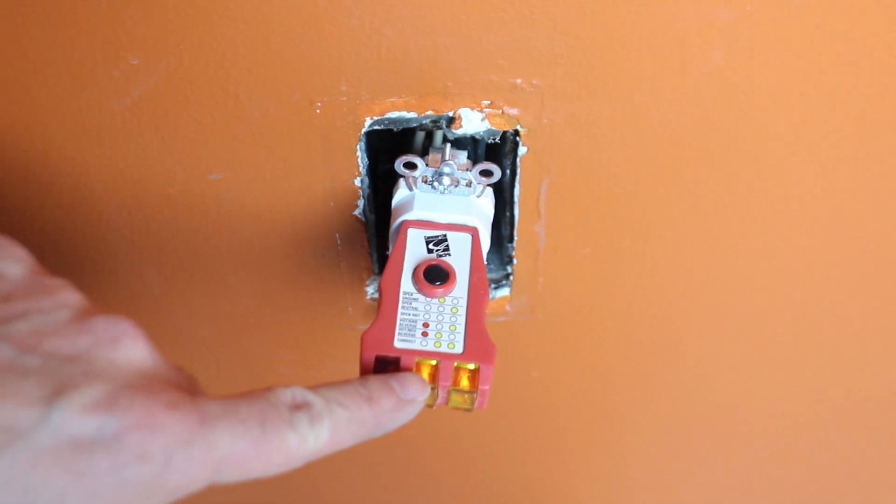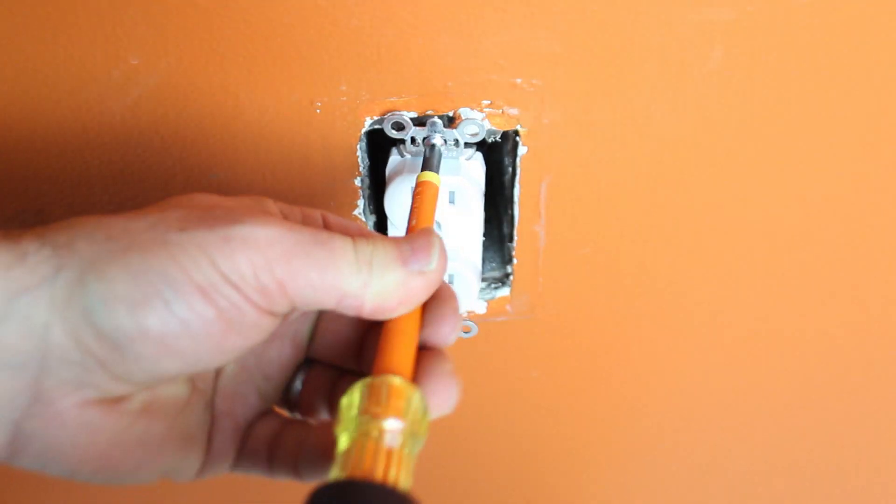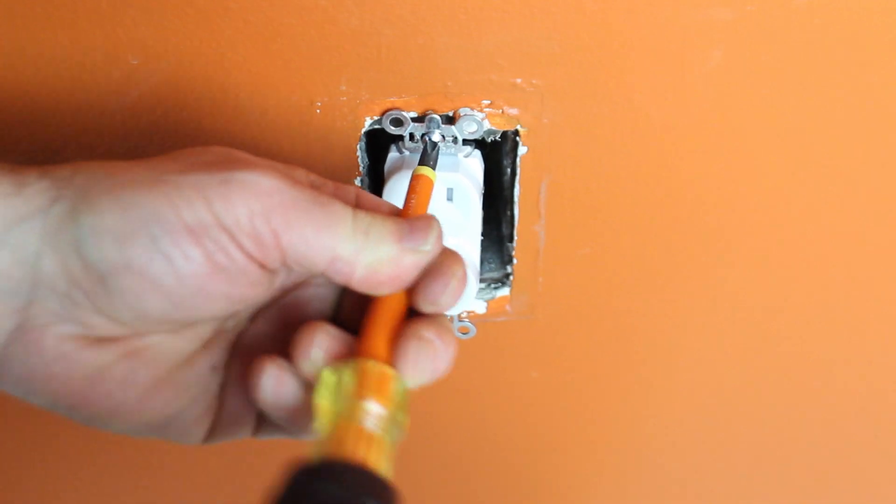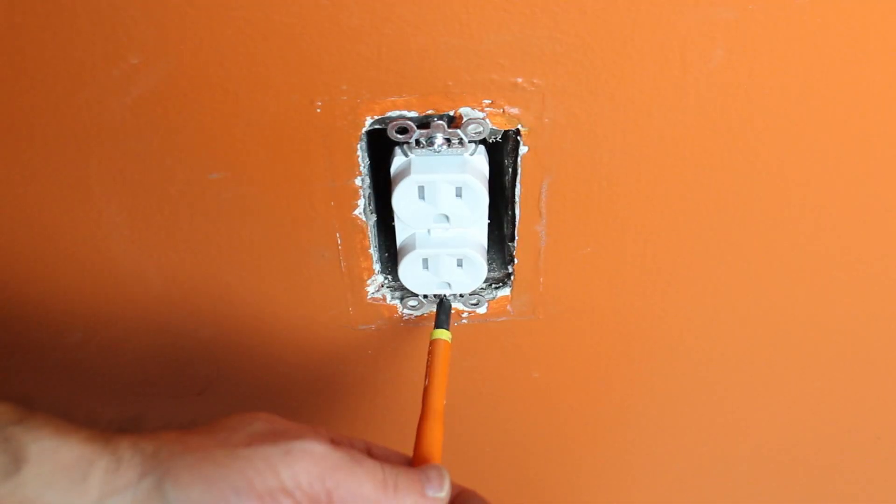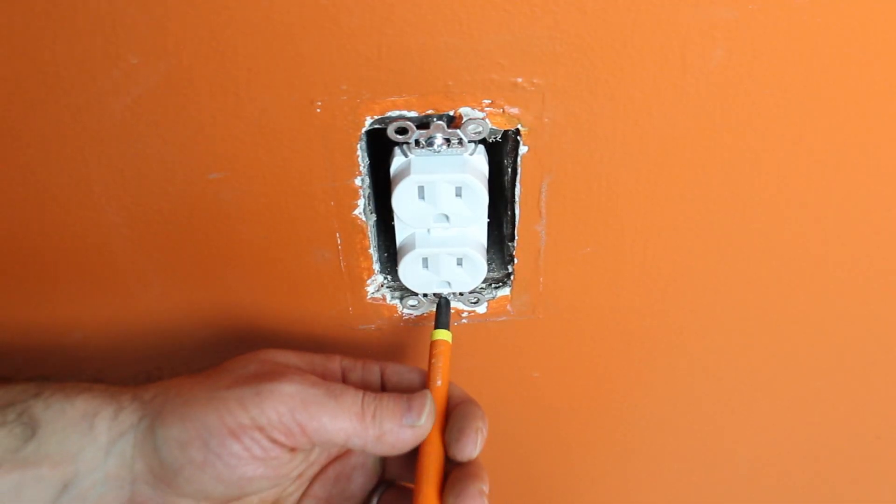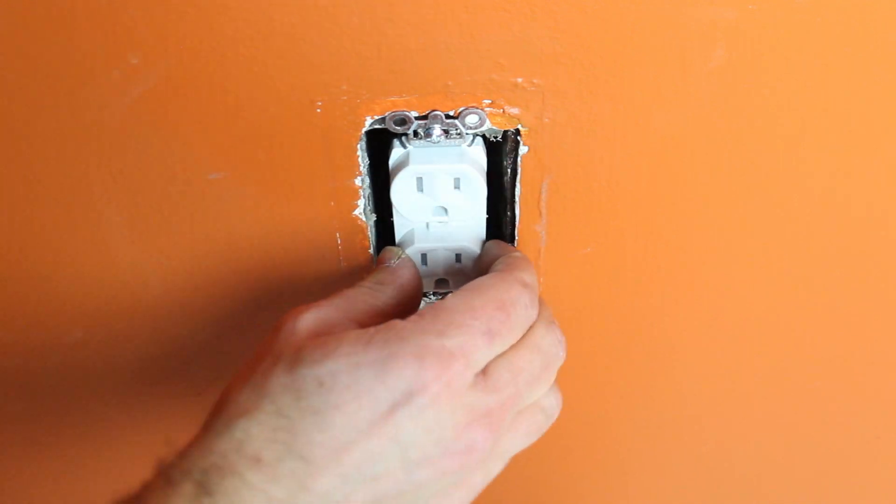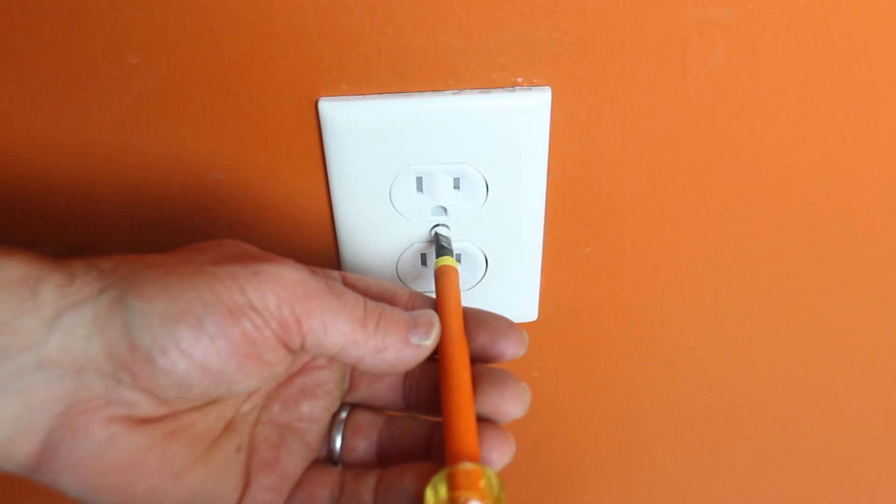Screw the electrical outlet to the electrical box with the two screws that came with the outlet. There you go. The outlet doesn't move. And then you can put the cover plate on. Do not over-tighten this screw to the cover plate because the cover plate will break. There you go. That's how you install an electrical outlet. Really simple.